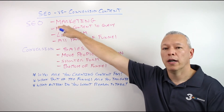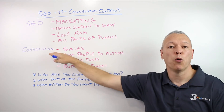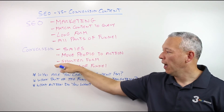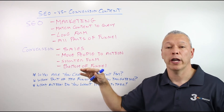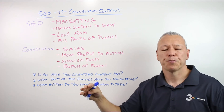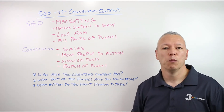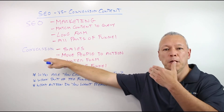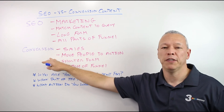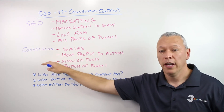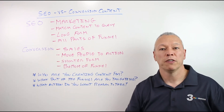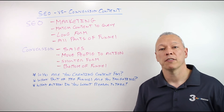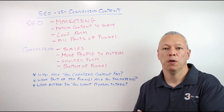With SEO content it's more marketing based, but with conversion type content it's more sales based — we're trying to get people to move and take action. Typically, conversion based content is shorter form. We're not creating 1000-plus word articles to convince them; we're doing something shorter, more benefit focused, bullet point focused — really get to the point. If somebody is thinking about contacting you, the last thing you want is for them to read a 1500-word article and be mentally exhausted 30 minutes later. Conversion based content is more of a sales pitch — maybe only 400 to 500 words, but with a lot of benefits and reasons to move to the next step.